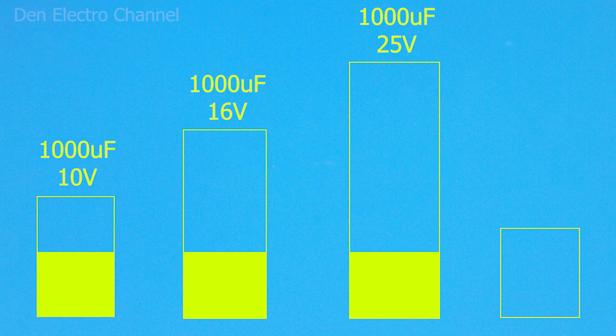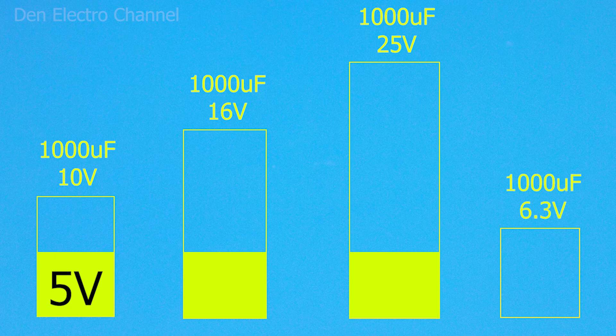You can use a capacitor with a lower voltage, but this does not always work. Here you need to know what voltage the faulty capacitor in the circuit was at. If I'm absolutely sure that this voltage is only 5 volts, then a capacitor of 6.3 volts can be used. The voltage reserve will be very small, but if there is nothing else at hand, then why not try?